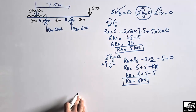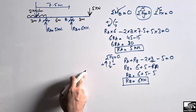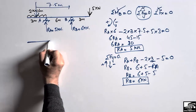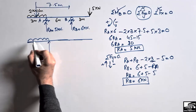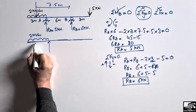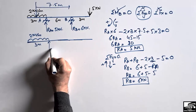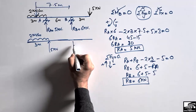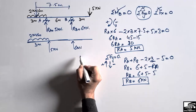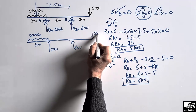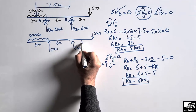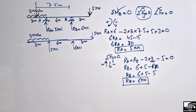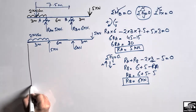We have found the support reactions for this beam. Now we can draw the free body diagram in order to draw the shear force and bending moment diagram. The loading includes: 2 kN per meter over a distance of 3 meters, reaction RA of 5 kN, reaction RB of 6 kN, and a concentrated load of 5 kN at the end. Let's draw the reference lines for the shear force and bending moment diagrams.